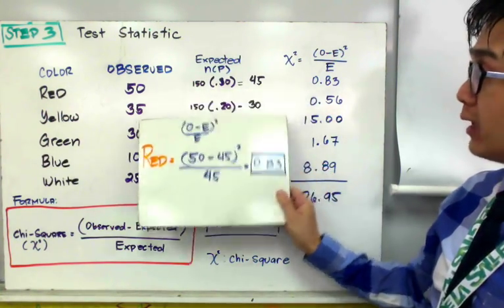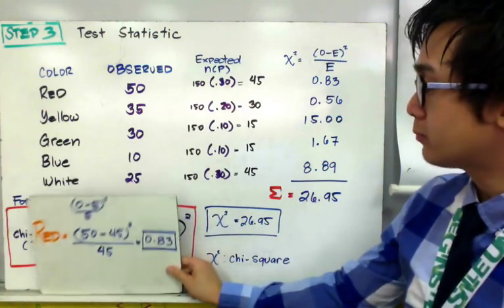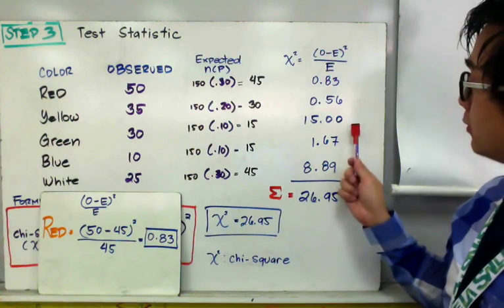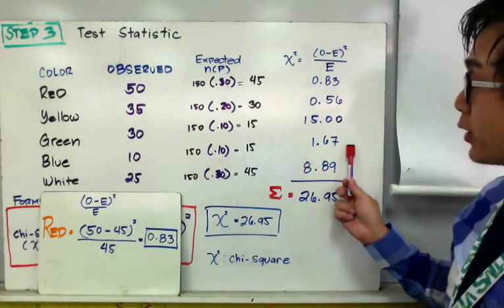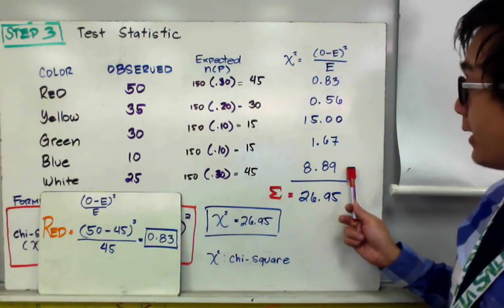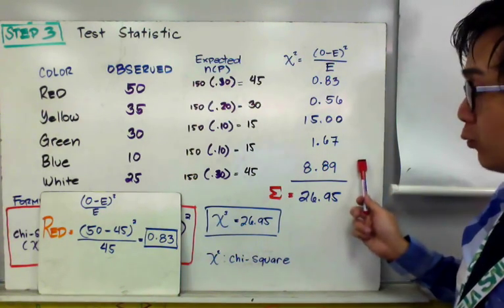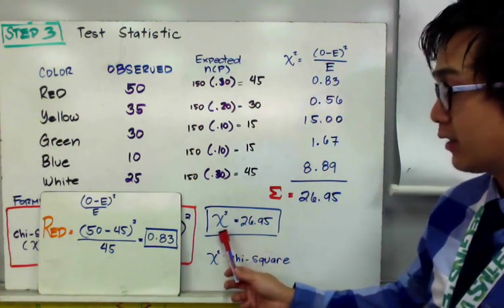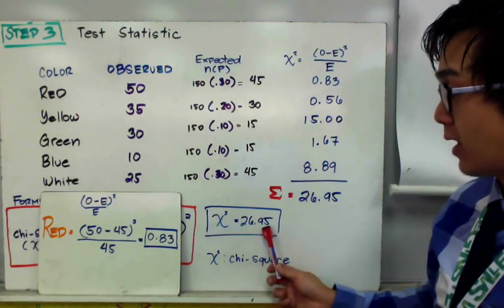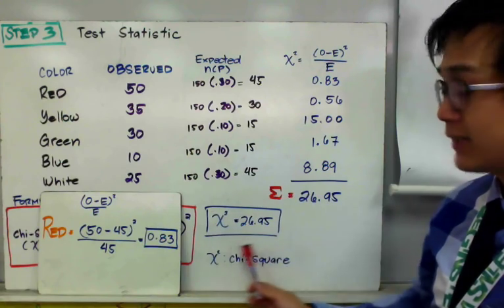Now we're going to do it with yellow, green, and blue. So if we use the formula, we'll have 0.56 for yellow, 15 for green, 1.67 for blue, and 8.89 for white. And to add them all up, we'll be able to find our test statistic, or our chi square test statistic, which is 26.95. So this is now our test statistic. It's neither T or Z. Now we have the chi square.